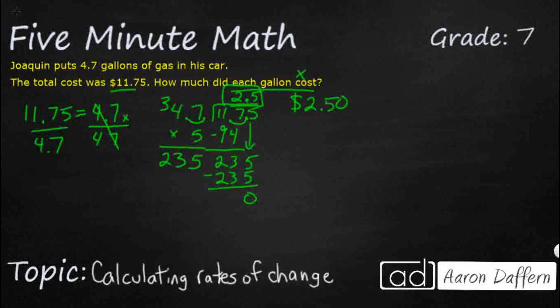So $2.50 per gallon, multiply that by 4.7 gallons, you get your 1175. Let's look at a different example.